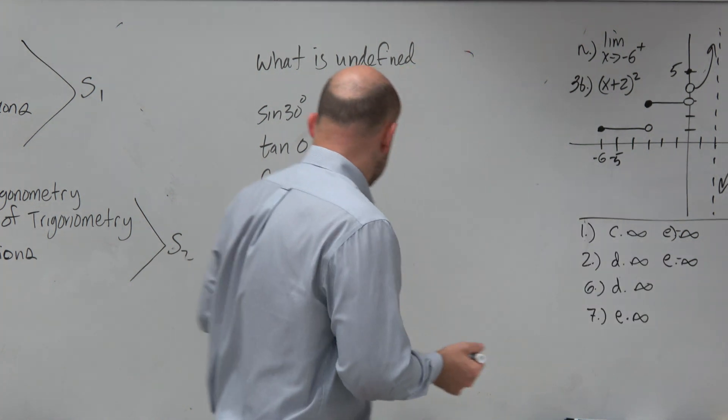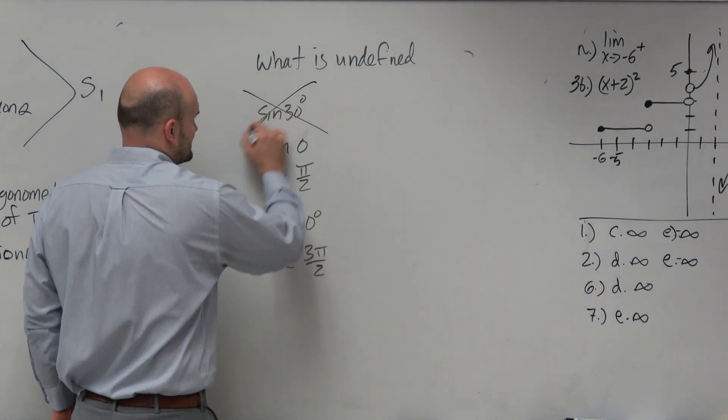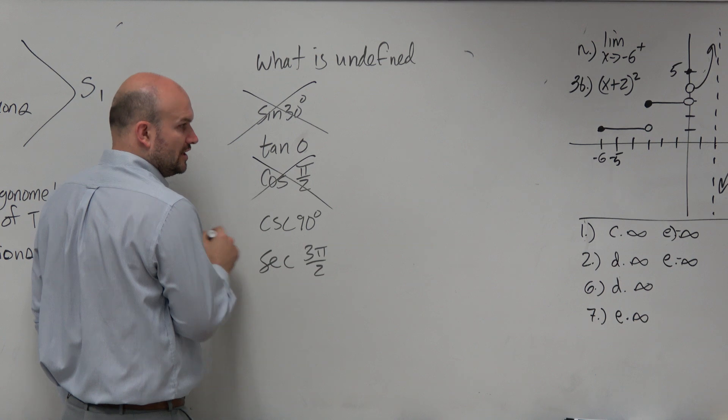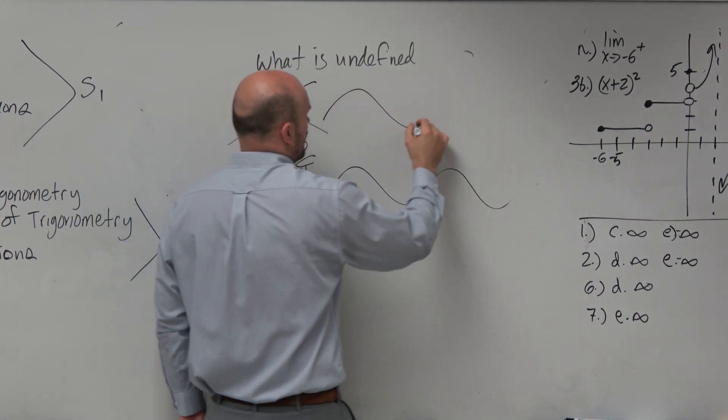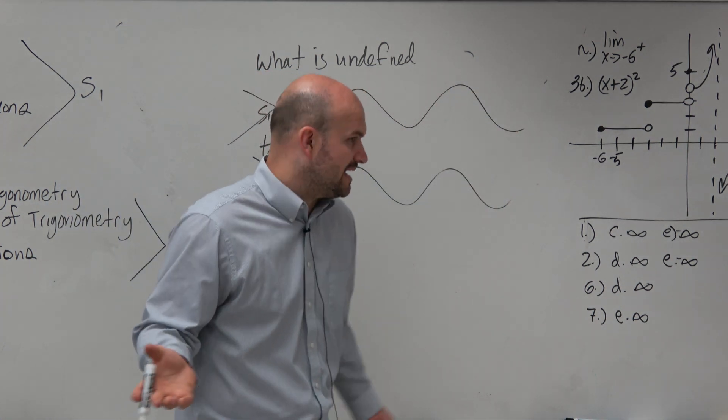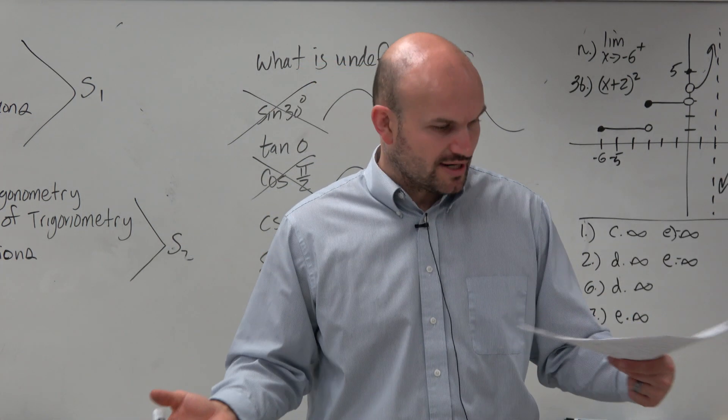If we look at our trigonometric functions, we know that sine and cosine are never undefined. They are defined for all real numbers. Their domain is all real numbers, so those are not the answer.